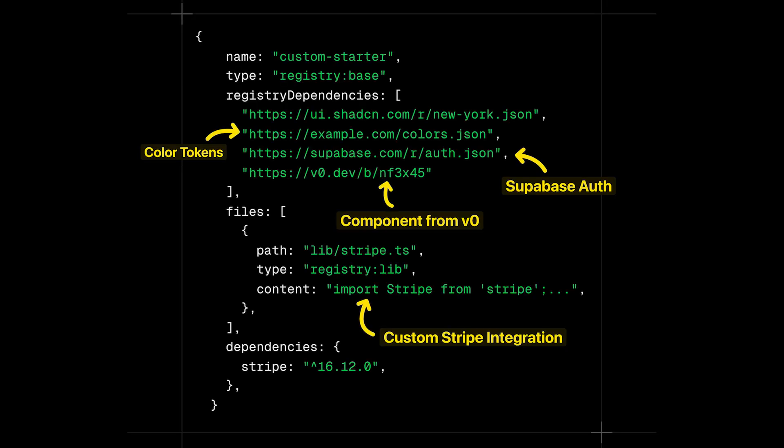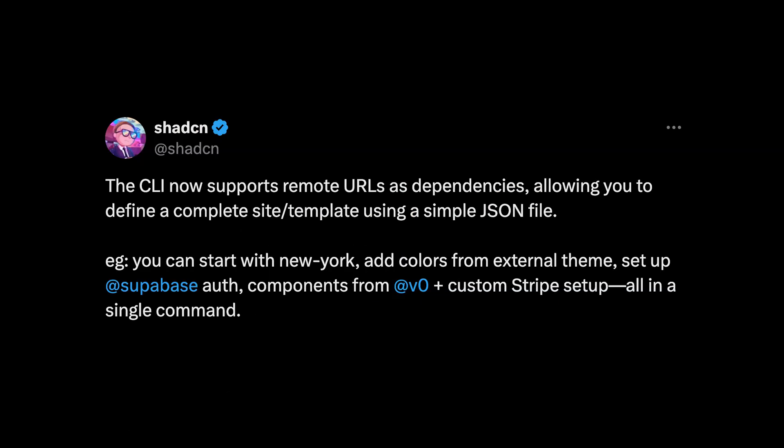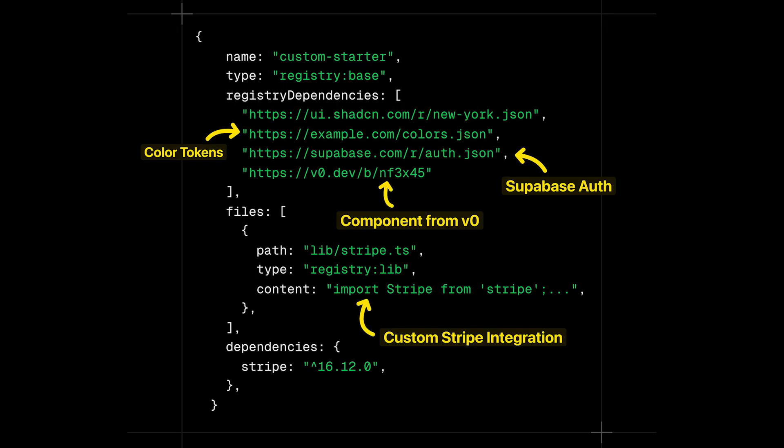You can see just how powerful this CLI could become in this tweet from ShadCN. He says you can start with the New York theme from ShadCN, add colors from an external theme, set up Supabase auth components from v0, and a custom Stripe setup — all in one single command. It would go ahead and set up all of that code, all the dependencies, and all the components you need.